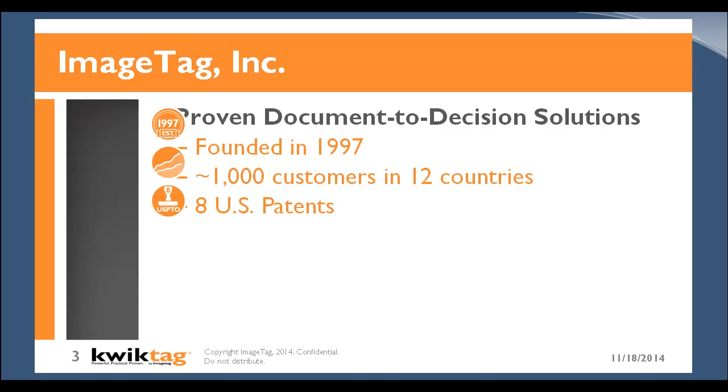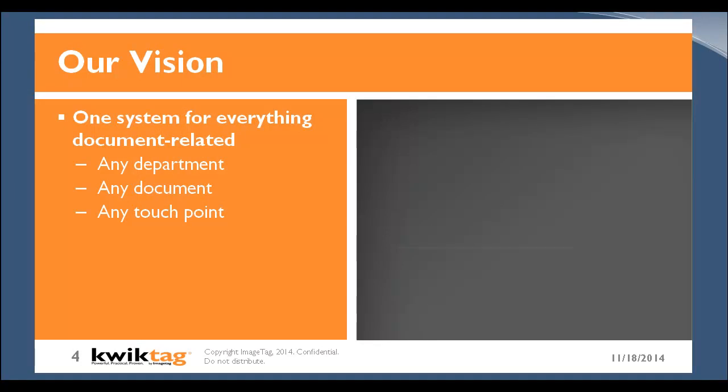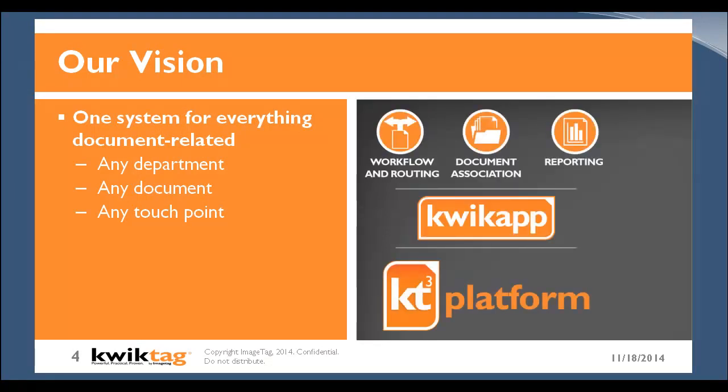Our vision is to deliver one system for everything that's document related. Regardless of which department in your organization has documents they need to digitize, organize, and gain control over — any type of document, whether invoices, purchase quotes, purchase receipts, packing slips — you don't have to think as narrowly as paper documents or even Word or PDF files. We actually have courthouses that use QuickTag to store copies of video depositions, with metadata added to those video files so it's easy to retrieve them based on particular keywords, organized and stored efficiently.